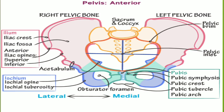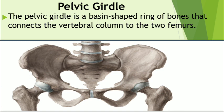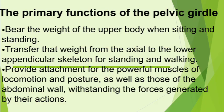The pelvic girdle is basin-shaped — a basin-shaped ring of bones that connects the vertebral column to the two femurs. In the illustration you can see the right and left hip bones articulating with the heads of the femur and also articulating with the vertebral column via the sacrum, which articulates with the fifth lumbar vertebra. The pelvic girdle has important primary functions: to bear the weight of the upper body when sitting and standing.